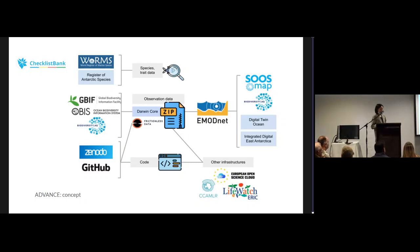The observational products can be fed into essential ocean variable matrices as we partner with SOOS, the Southern Ocean Observing System, as well as other entities. For this approach to work, persistent unique identifiers as well as web services are important.